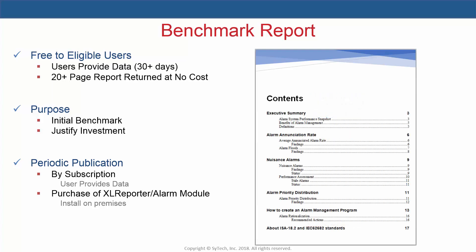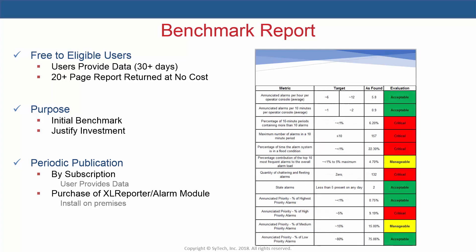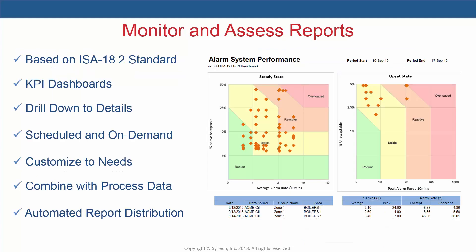The benchmark report provided by SciTech is an ideal starting point for any alarm system improvements. It provides an overview of the current state of the system and highlights problematic areas. This report is available free of charge to eligible users who provide SciTech with at least 30 days of alarm data. The monitoring and assessment phase of the ISA 18.2 life cycle requires continuous system performance feedback, which XLReporter's advanced alarm reports provide in the form of out-of-the-box KPI dashboards and detailed analysis reports. Users can even drill down into raw alarm data so no detail is left hidden.